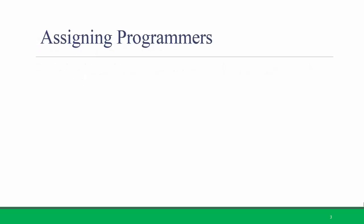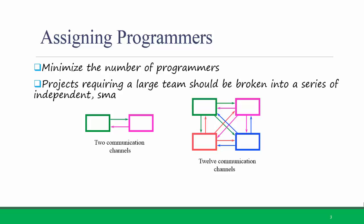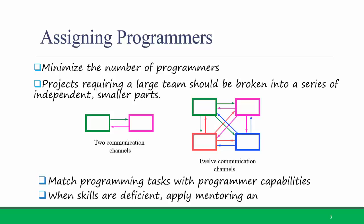The first key task in managing the programming process is assigning the right programmers to do the coding of the new system. First, try to minimize the number of programmers. The more programmers you have involved, the more coordination and communication channels are open. Projects requiring a large team should be broken into a series of independent smaller parts to reduce the coordination costs. Try to match programming tasks with programmer capabilities and strengths, and when skills are deficient, apply mentoring and training.